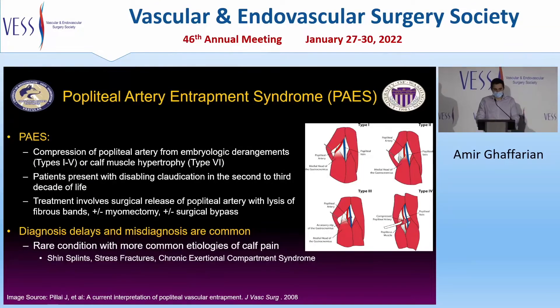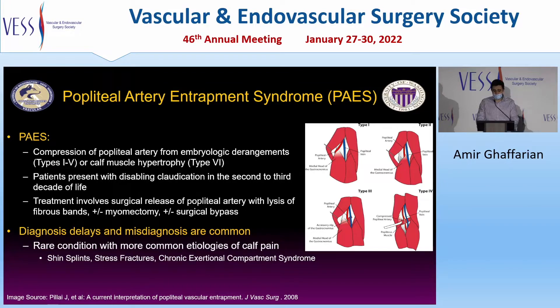Popliteal artery entrapment syndrome is compression of the popliteal artery from embryologic derangements, types 1 through 5, or calf muscle hypertrophy, which is type 6.